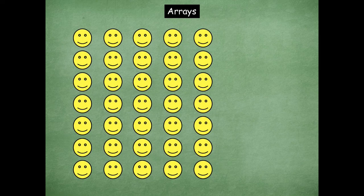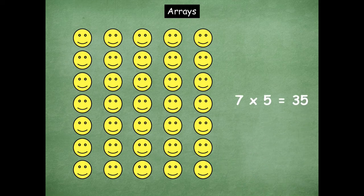All right, here's another one for you. I love this one — this one makes me happy with all these smiley faces. So how many rows are there friends? Seven. How many are in each row? Five. So what's our multiplication sentence that matches this array? Seven times five equals 35. Awesome.